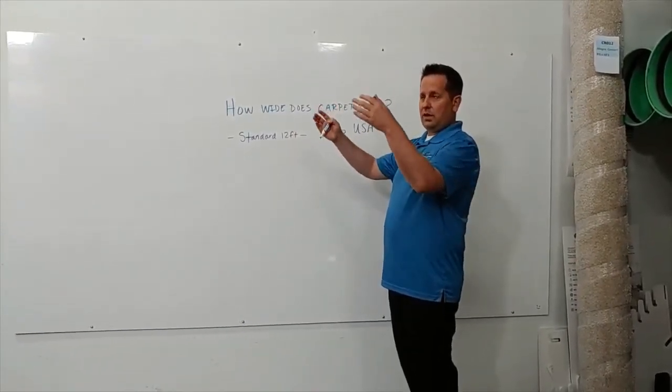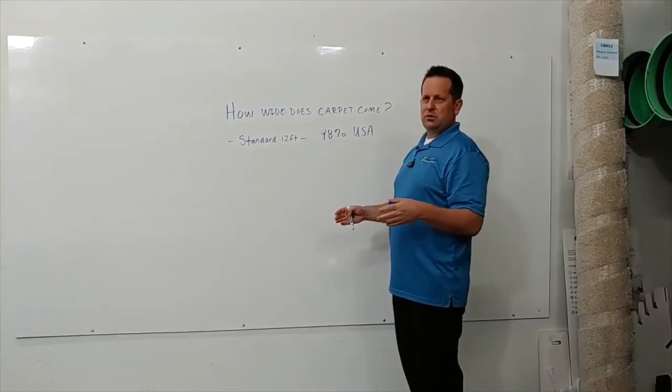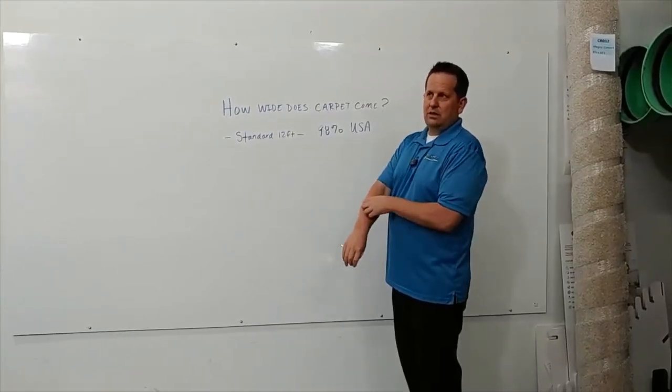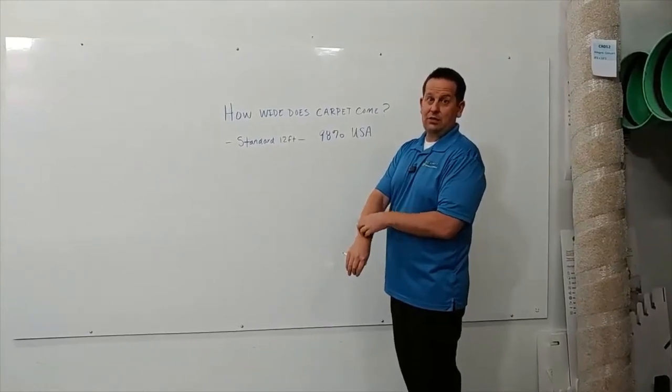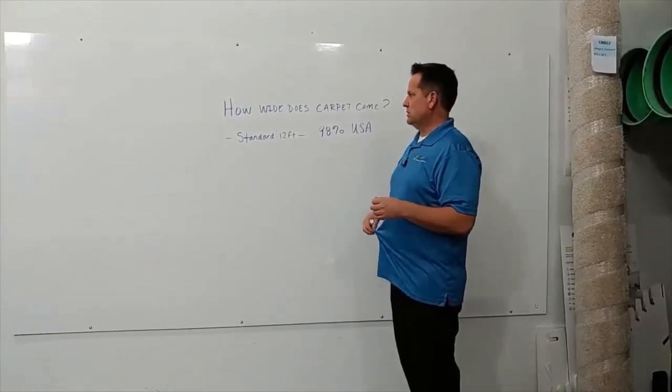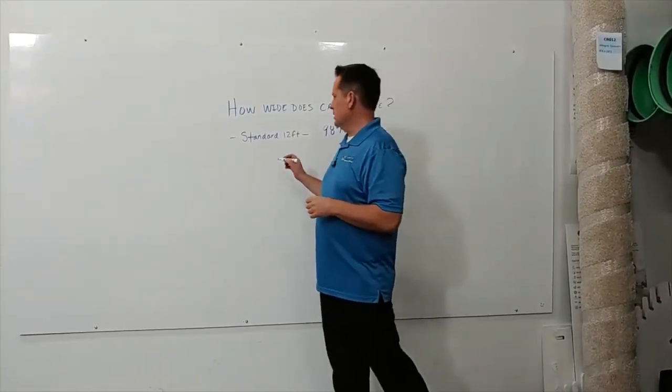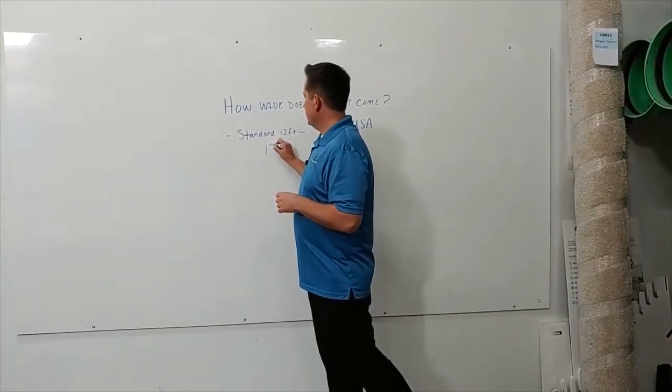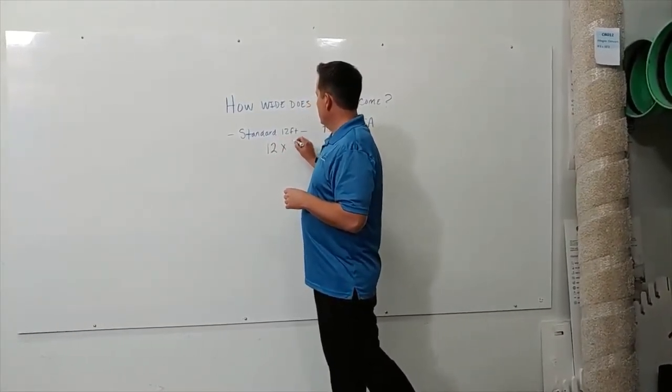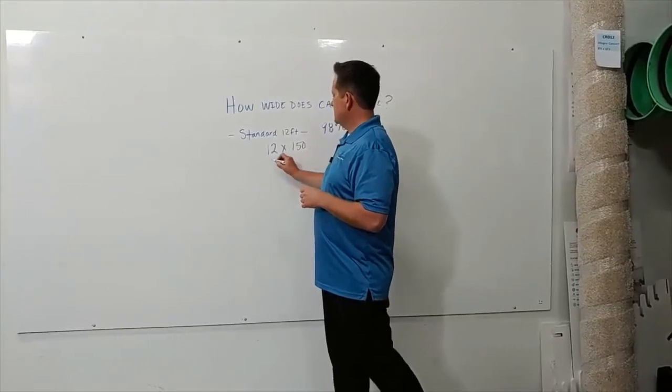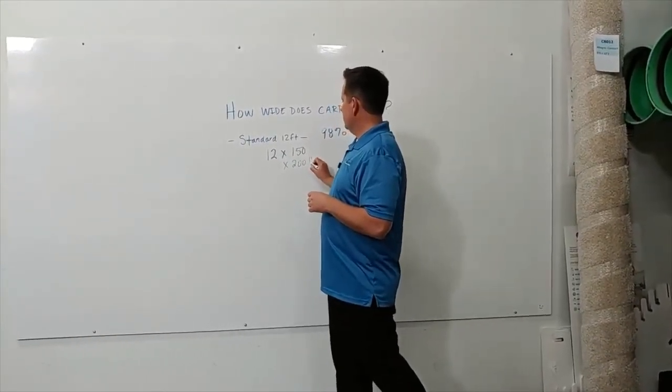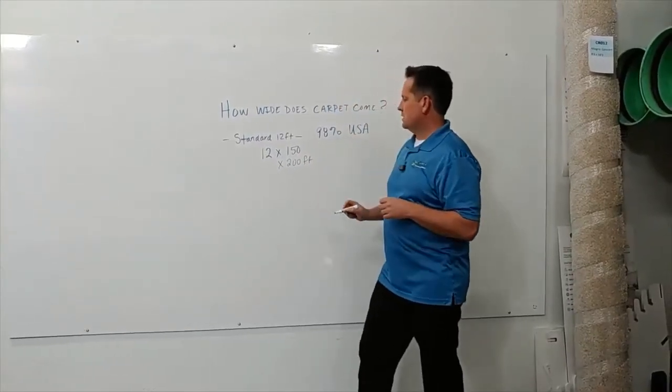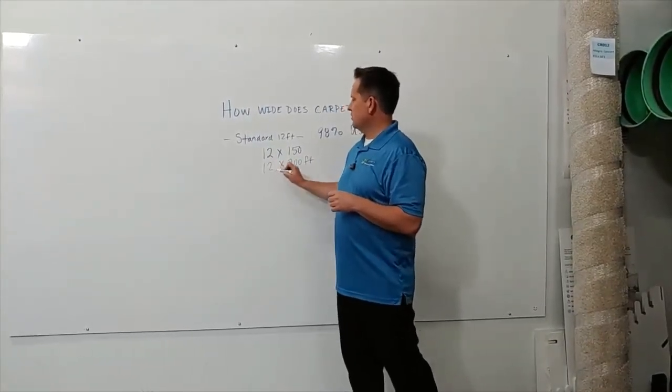You can get carpet 12 foot wide by any length up to a certain point because if it was 300 feet long, sometimes that works but it can get really heavy. Usually a standard carpet roll is 12 feet by anywhere from 150 to 200 feet long. That's a standard roll.